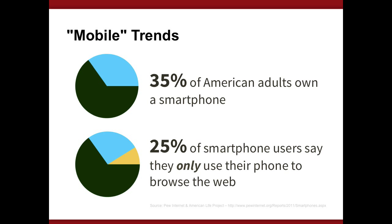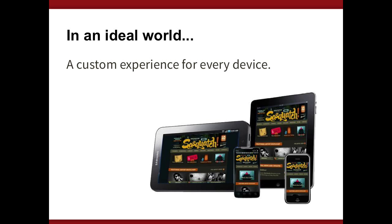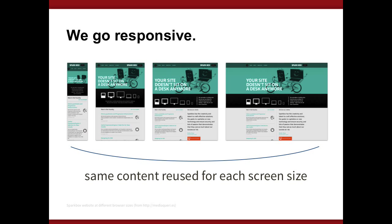Some mobile trends: 35% of American adults own a smartphone, and 25% of those users say they only use their phone for browsing the web. This is actually an old statistic from 2011, so it's certainly higher now. In an ideal world, we would have a custom-tailored experience for every device — and if you have the resources, go for it. But we don't often have those resources, so instead we go responsive.